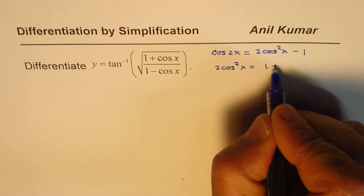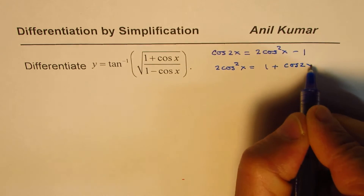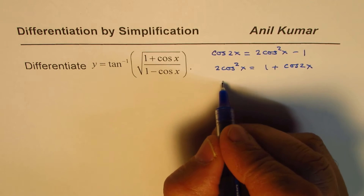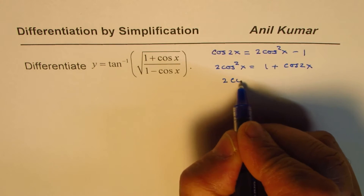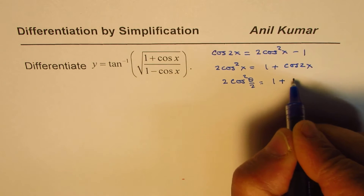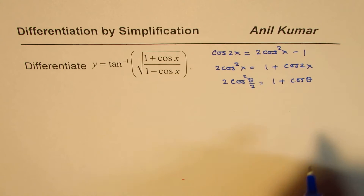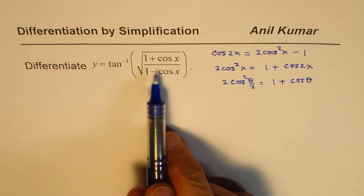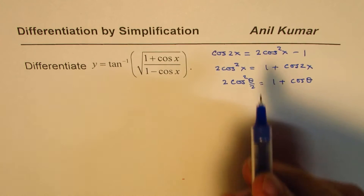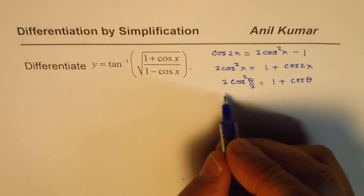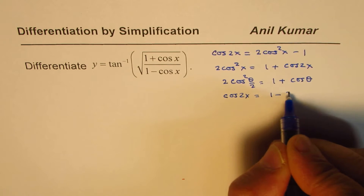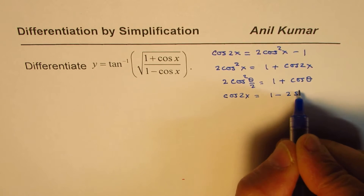Now if we replace the angle x by θ/2, we get 2cos²(θ/2) equals 1 plus cos θ. Similarly, cos 2x can also be written as 1 minus 2sin²x.